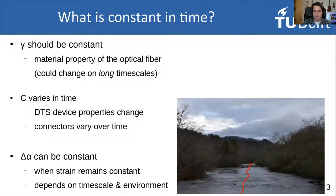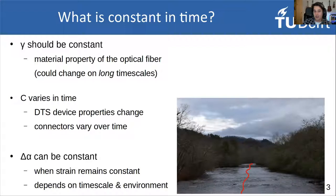The C parameter will vary in time as the DTS device's properties change with temperature or as the connectors vary in temperature. The differential attenuation can be constant in time, however, only when strain remains constant. This depends on the time scale and environment you're measuring in. For example, if a fiber is placed on a stream bed and high flow passes by causing the cable to shift with sediment or branches, the strain the fiber experiences will change, meaning the differential attenuation will change. So you'll have to break up your calibration into steps to deal with this changing differential attenuation.